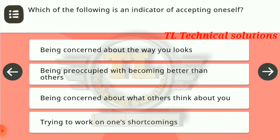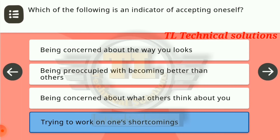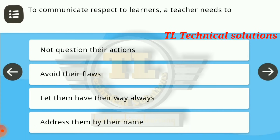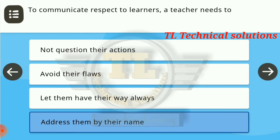Next question: which of the following is an indicator of accepting oneself? The correct answer is trying to work on one's shortcomings. Next question: to communicate respect to learners, a teacher needs to address them by their names.